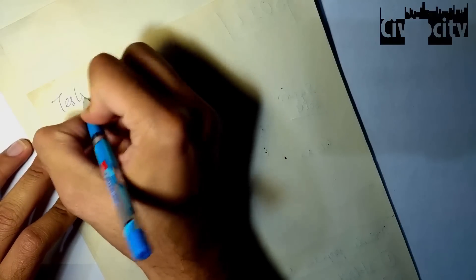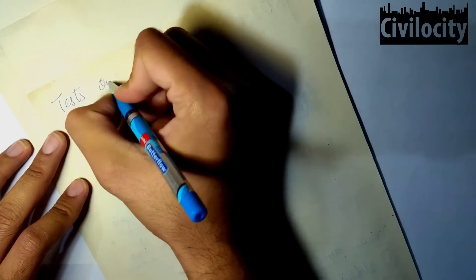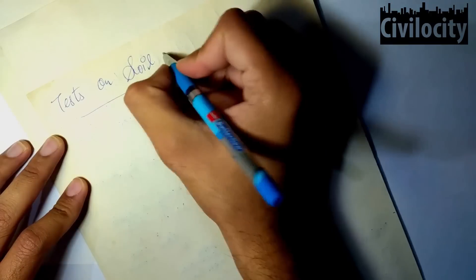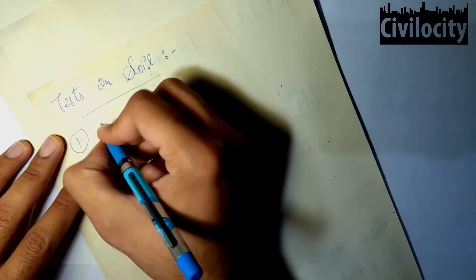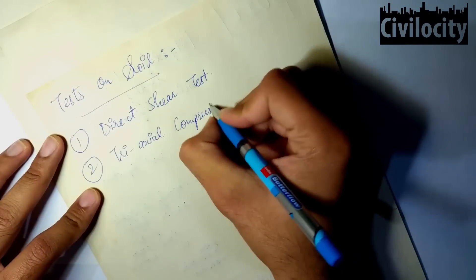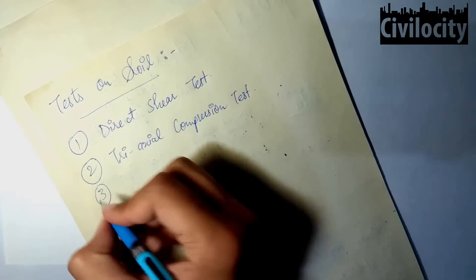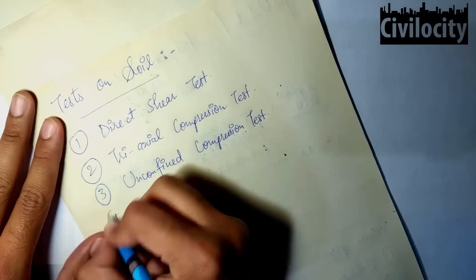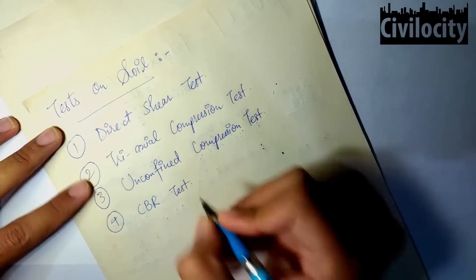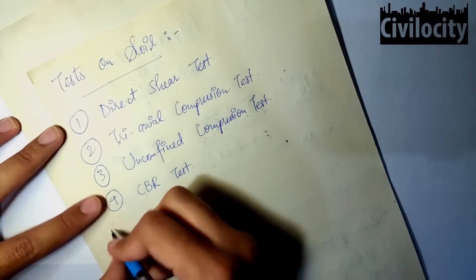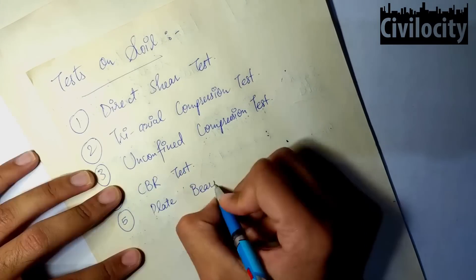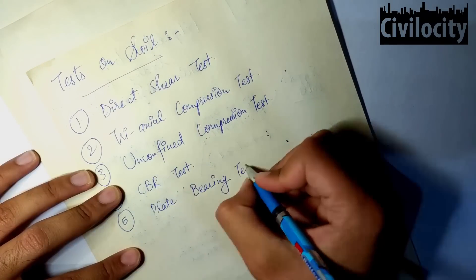There are a number of tests on soil in highway engineering. The first is direct shear stress, the second is triaxial compression test, the third is unconfined compression test, the fourth is the CBR test or California Bearing Ratio test, and the fifth is the plate bearing test.